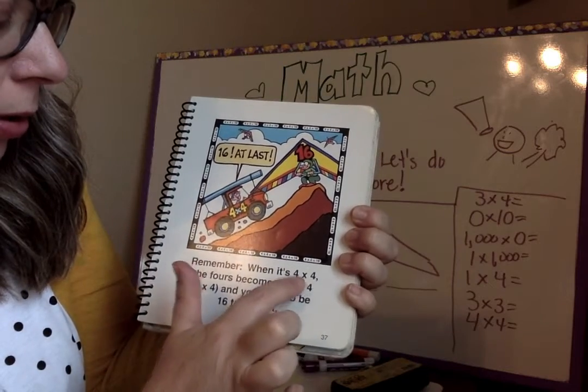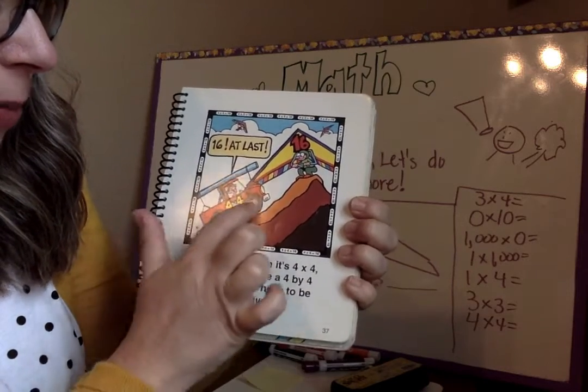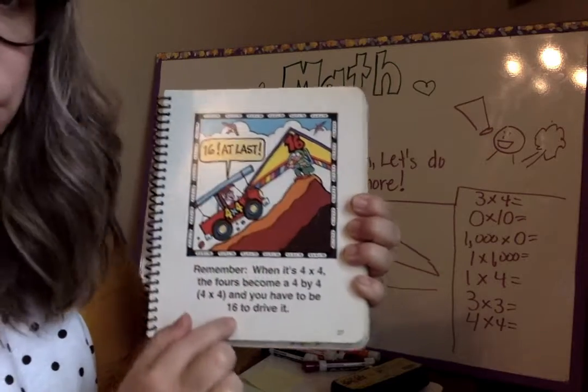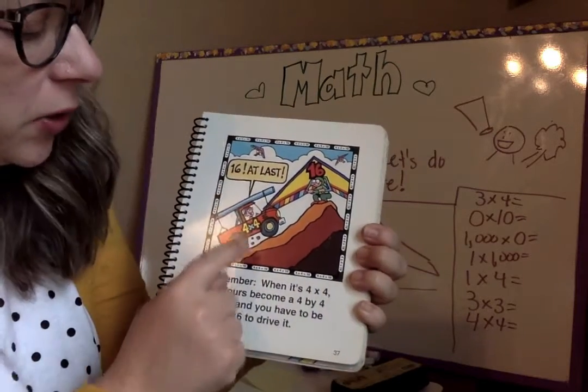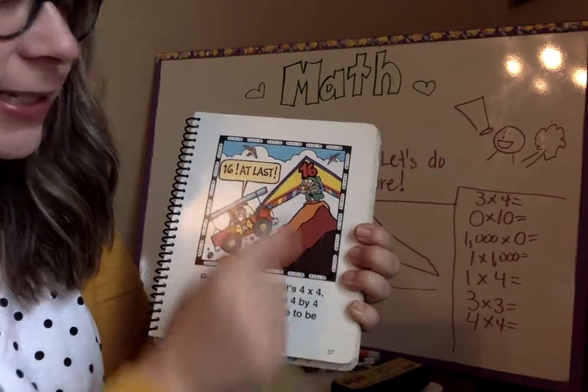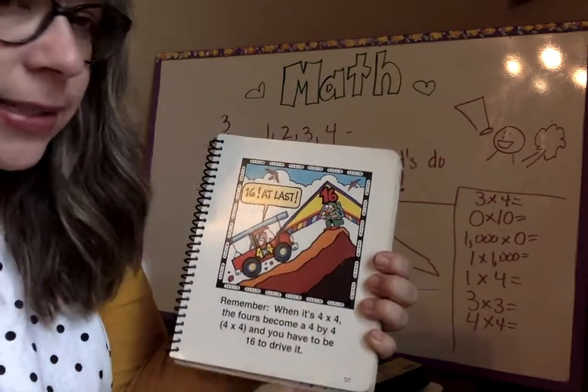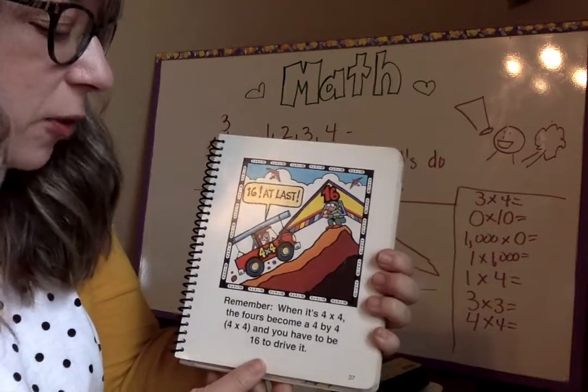So remember, when it's four times four, the fours are the four by four car and you have to be sixteen to drive your four by four car. So four times four is sixteen. That four by four, you have to be sixteen to drive that four by four.